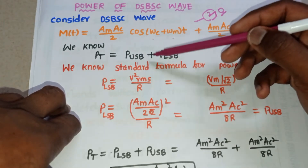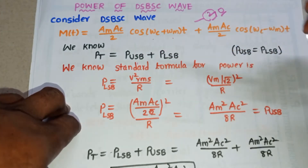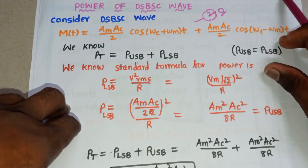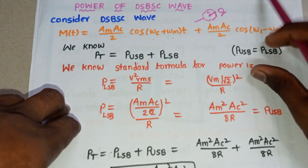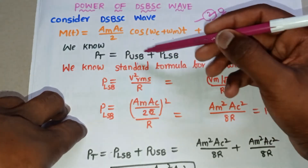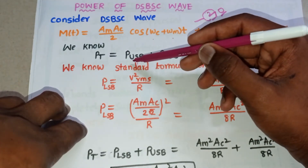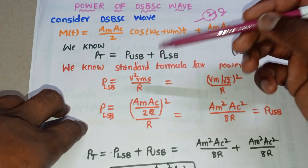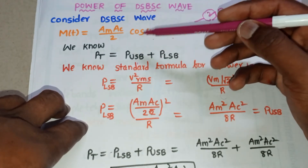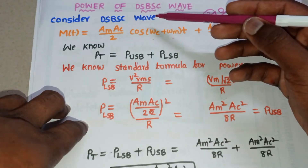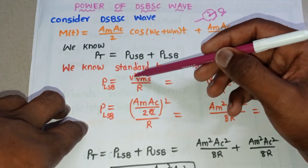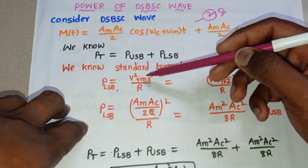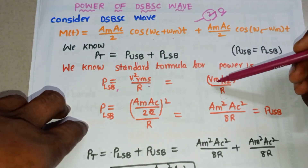To find the total power, we first find the power of each sideband. Both sidebands have the same power — power of USB equals power of LSB — as is the case in amplitude modulation as well. We use the standard power formula P = V²rms / R.